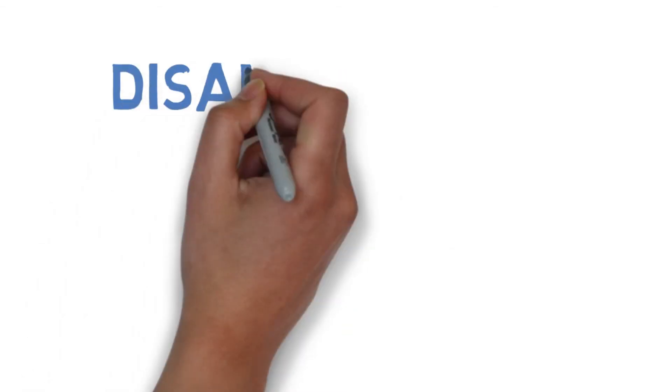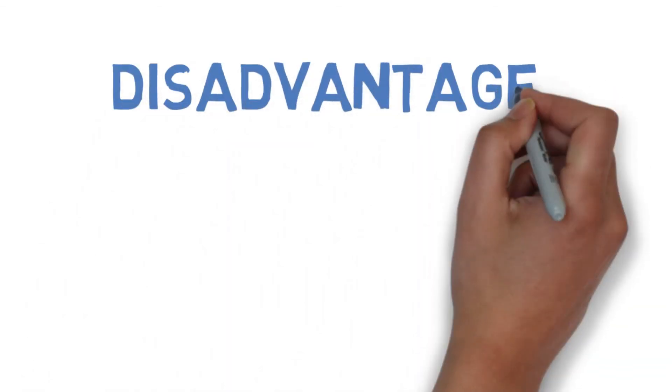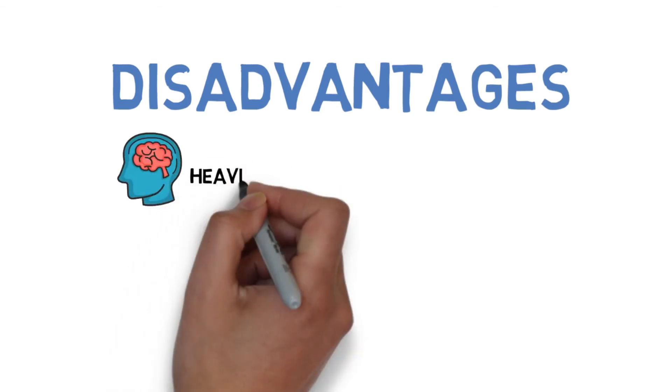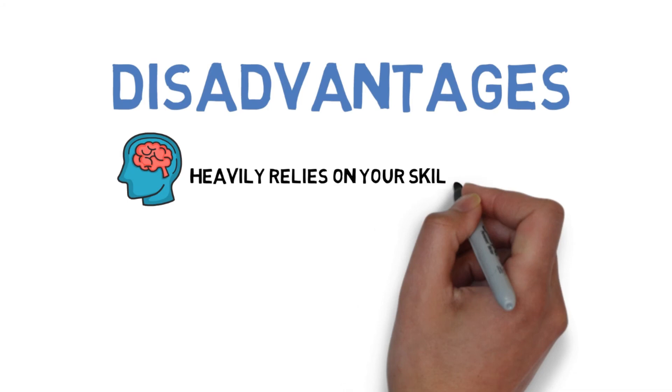There are two primary drawbacks related to the Kelly Criterion. The first is that it relies altogether upon your capacities to accurately and reliably work out the genuine probabilities of wagers.